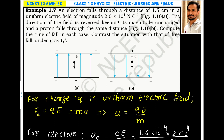Example 1.7. An electron falls through a distance of 1.5 centimeter in a uniform electric field of magnitude 2×10⁴ Newton per Coulomb. The direction of the electric field is reversed, keeping its magnitude unchanged, and a proton falls through the same distance. Compute the time of fall in each case, and contrast the situation with that of free fall under gravity.